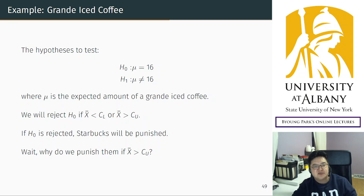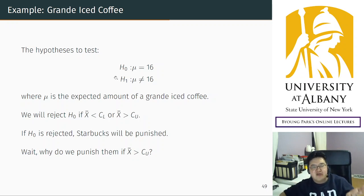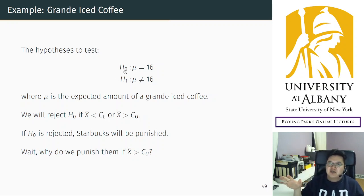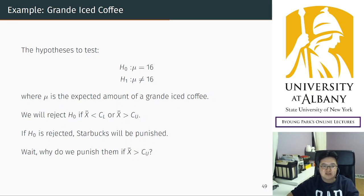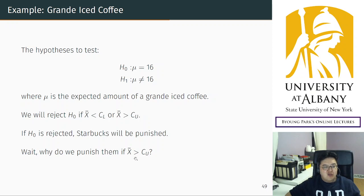The problem here is: you are a government agent, and based on this hypothesis testing, you can punish Starbucks if they are cheating. That means if the sample average is too small or too large, you reject the null hypothesis and punish Starbucks. However, why do we punish them if they give you more than 16 ounces? It's really stupid to punish Starbucks just because they are too generous toward their customers.